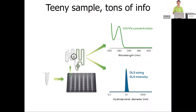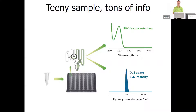Once inside the Stunner, the sample is read by UV-Vis and DLS in chambers with fixed path lengths that ensure extremely high precision for UV-Vis reads. The sample is also read for static light scattering, or SLS intensity. The DLS laser's intensity hits the particles in your sample, and how much light is bounced back to the detector is the static light scattering intensity. All three pieces of information are used together in the Stunner.